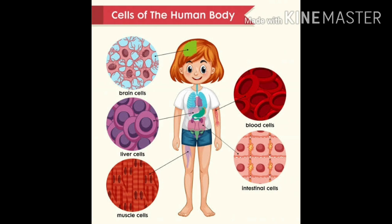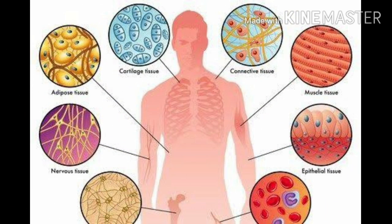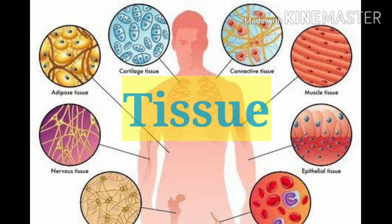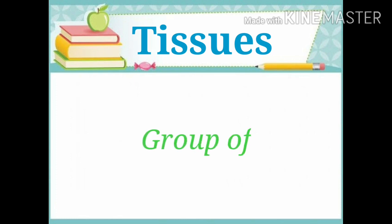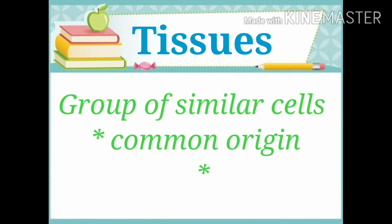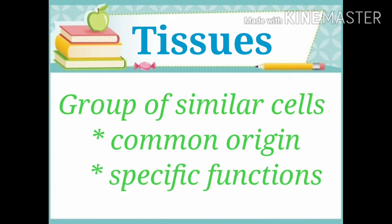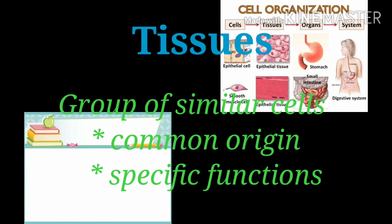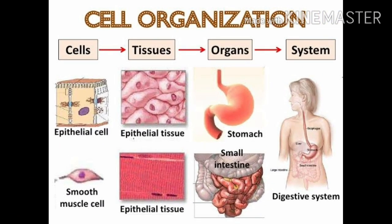These cells form a group of cells that have a common origin — tissues. There are different types of cells that make different organs, and different organs that form a different organ system.